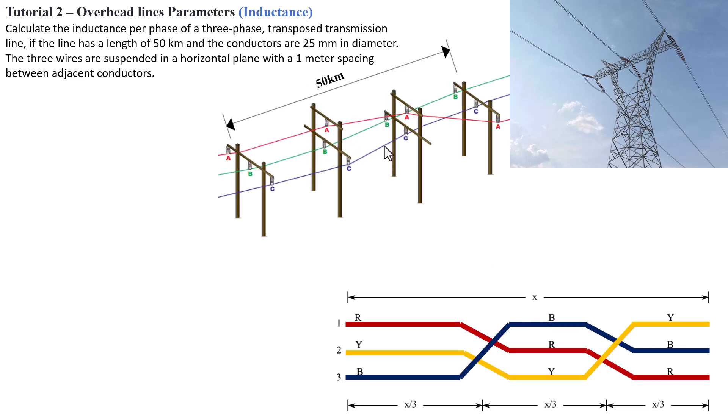Now transposition of the transmission line cable is basically what you see here. We're basically changing periodically the positions of each one of the lines. So the red line, the yellow, or the blue line, they're going to be swapping position. This is done to reduce what is known as cross talk, otherwise to improve the transmission line efficiency.